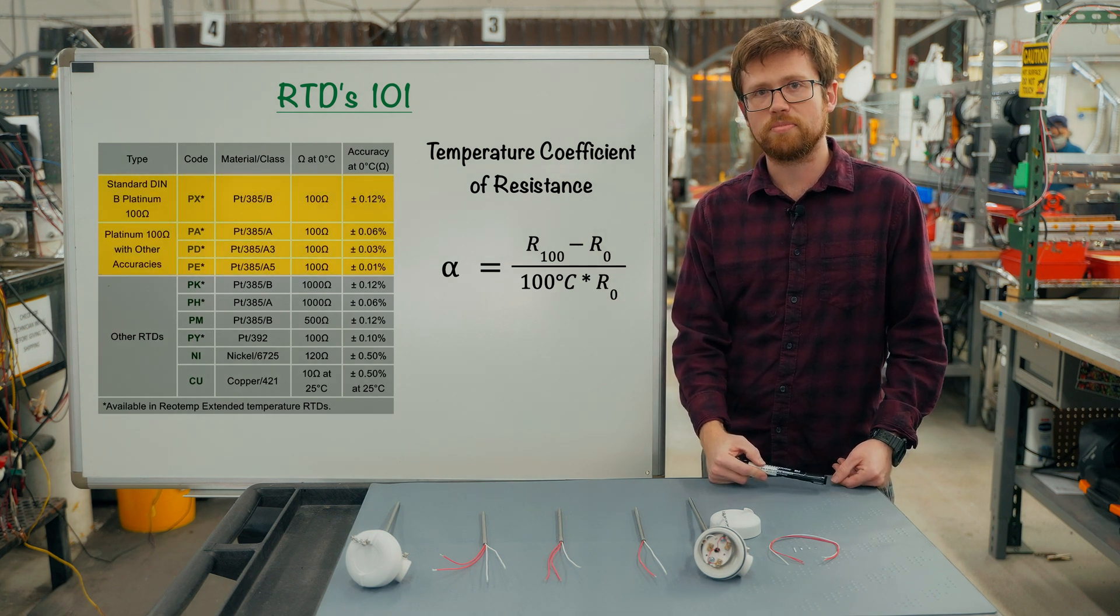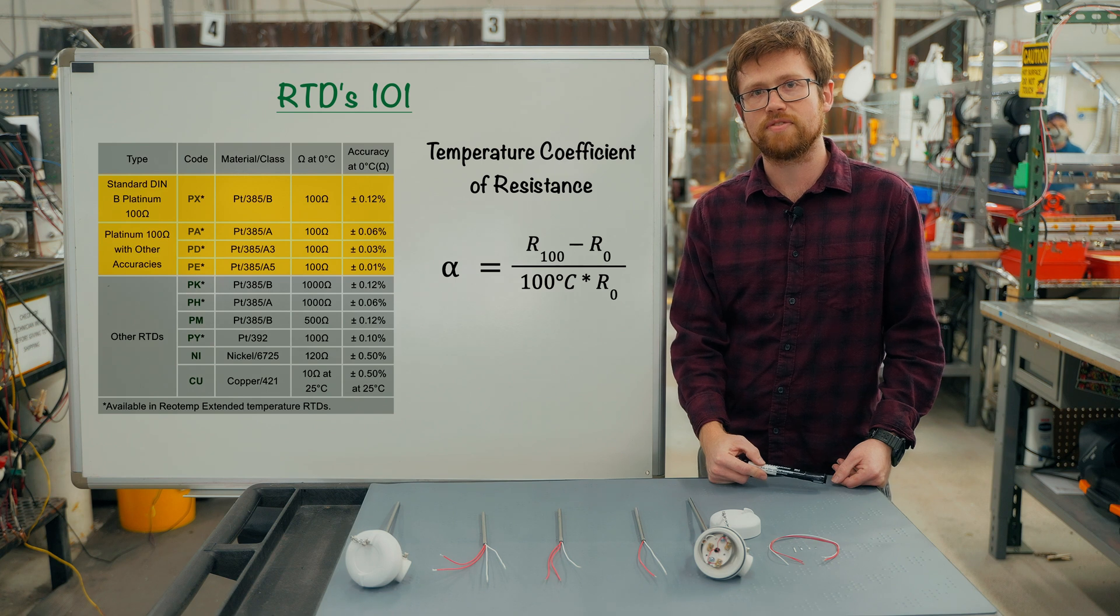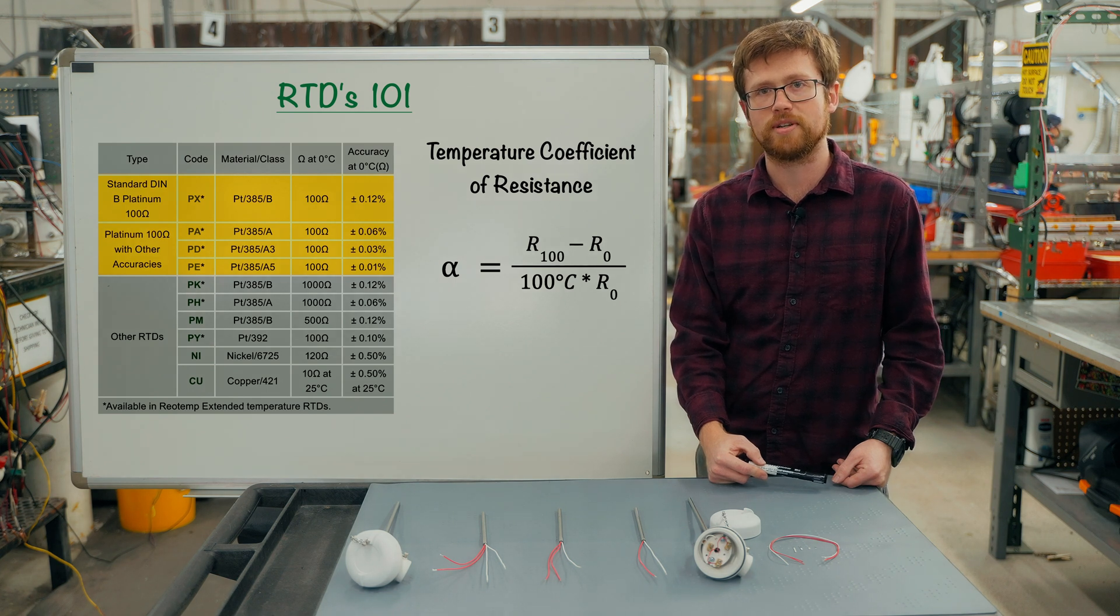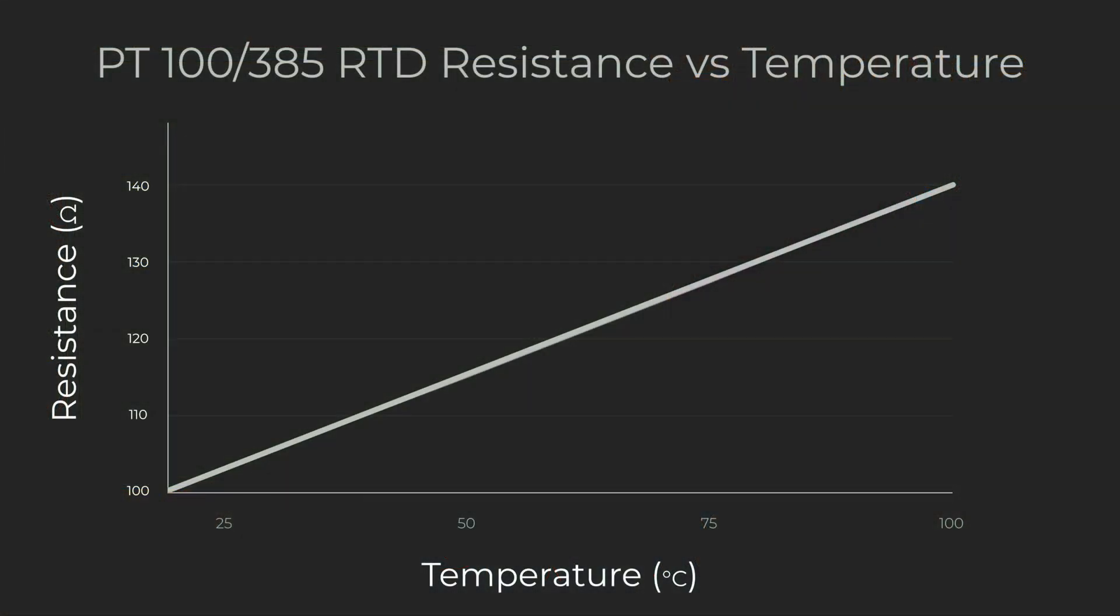In the industrial world, PT100/385 alpha RTDs are by far the most common. This terminology means that the RTD has a resistance of 100 ohms at zero degrees C and a slope of resistance from zero to 100 degrees C of 0.00385 ohms per ohms degree C.